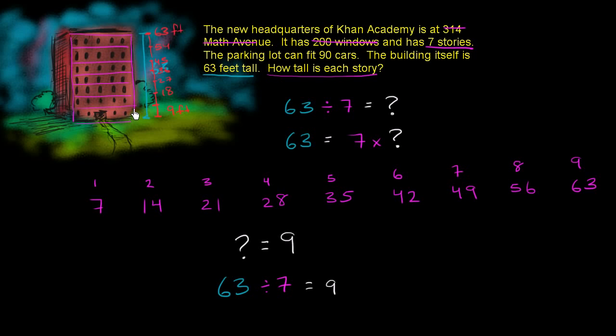So if each floor is nine feet high, you just have to keep adding nine every time you add a floor. And you see if you do that, if you have seven floors, you're going to get to 63 feet. So it completely makes sense. Each story is nine feet tall.